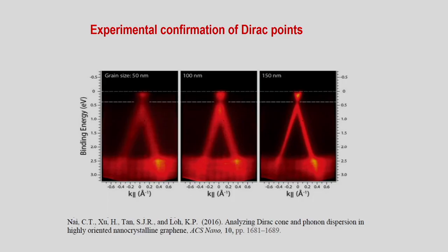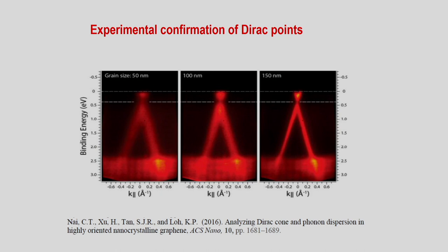This is experimental confirmation of the Dirac points via photoemission studies (ARPES). One measures the binding energy as a function of the planar wave vector. A photon shines on the surface, electrons are emitted and captured, giving the binding energy. This is plotted as a function of K_x and K_y — referred to as K-parallel — and you can clearly see the Dirac-like linear dispersion near the Fermi level. There are many other confirmations of the Dirac spectrum.